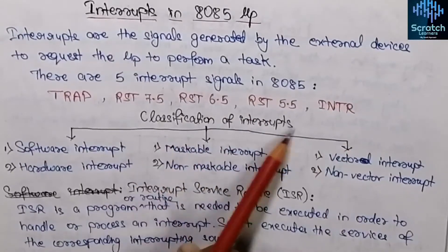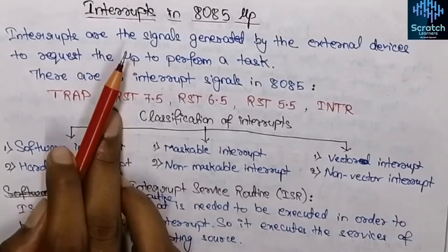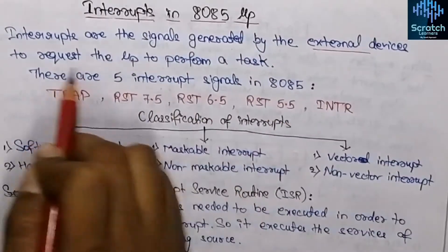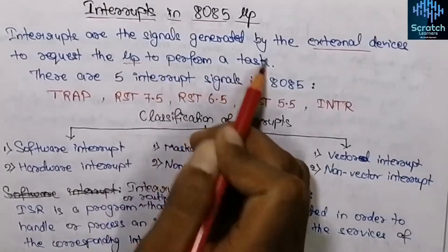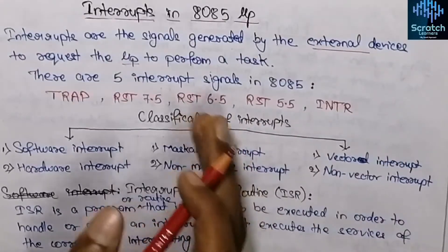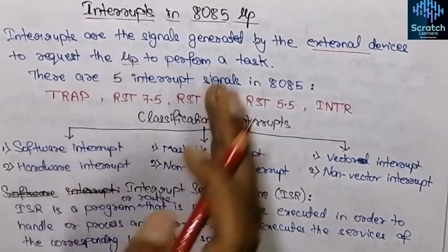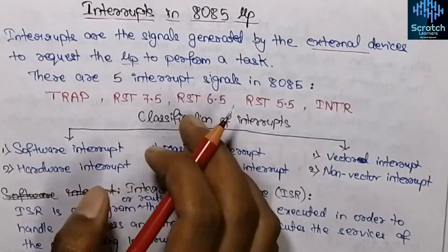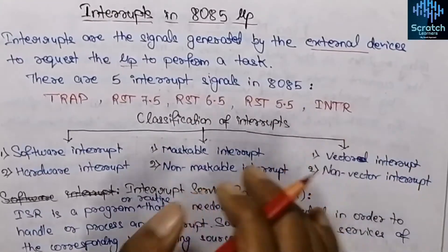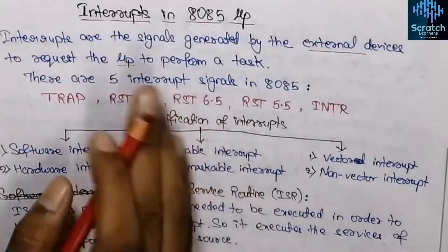The most basic question: what is an interrupt? Interrupts are the signals generated by an external device to request the microprocessor to perform a task. These are signals generated by some external device — that means some device other than the microprocessor — to request the microprocessor to perform a specific task. In short, an interrupt is a process where an external device can get the attention of the microprocessor.